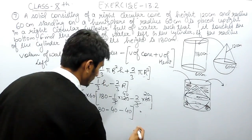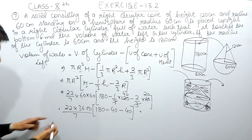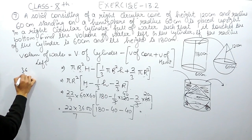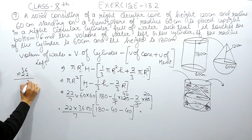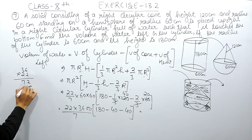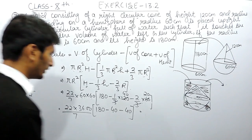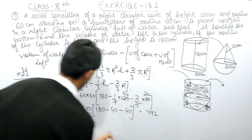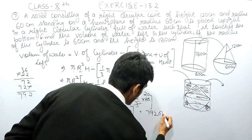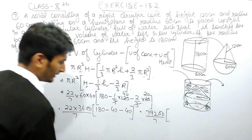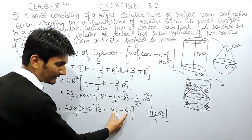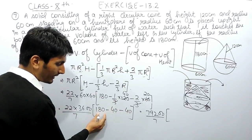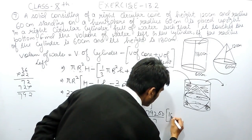Solving further: 36 × 22 = 792, so we have 79200/7. Inside the bracket: 180 − 40 − 40 = 180 − 80 = 100. So the expression becomes 792 × 100 / 7, giving the volume of water left inside the cylinder, in centimeters cubed.